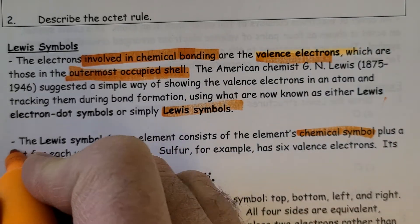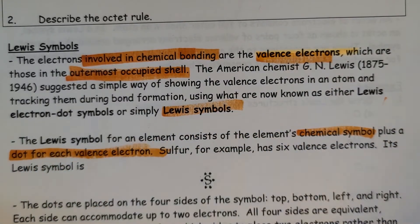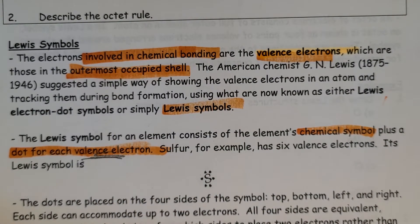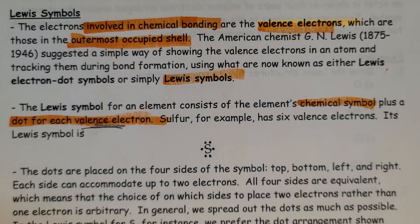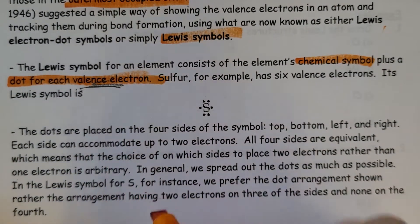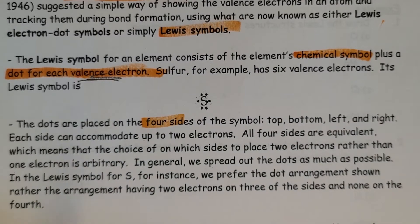The Lewis symbol for an element consists of the element's chemical symbol plus a dot for each of those outer or valence electrons. For example, sulfur has six valence electrons and its symbol looks like that.